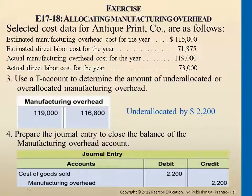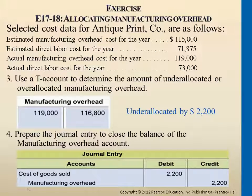Up to this point, we have completed all the processes of the manufacturing company's costing system — the job costing system, job orders. Next, we will talk about process costing. Before that, we need to go over another type of company: the service company.